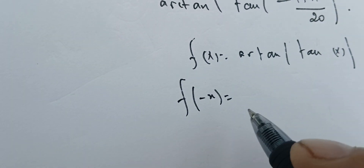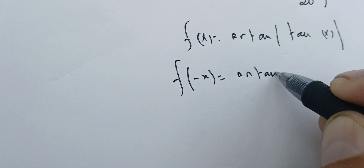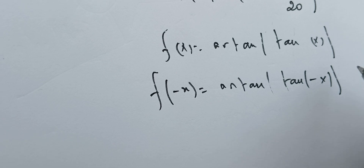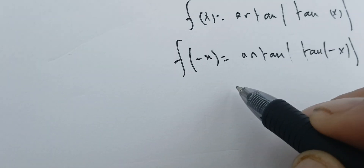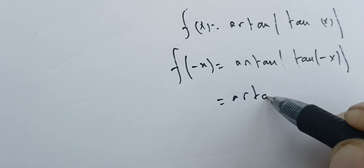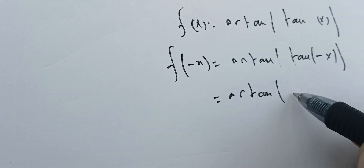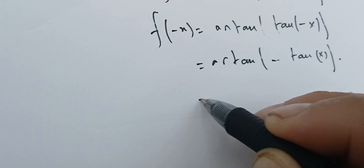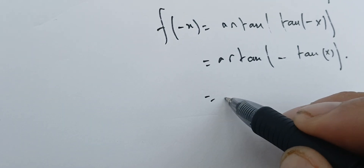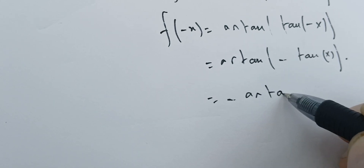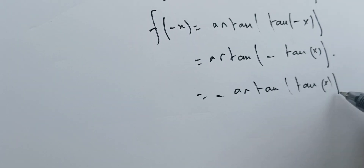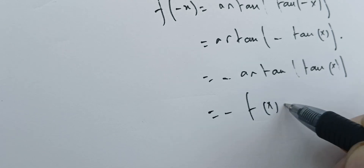We have f(-x) = arctangent of tangent of (-x). We know that tangent is an odd function, so we can take the minus outside of the tangent. And also, we know that arctangent is odd, so we can take the minus outside as well. This proves that our function is odd.